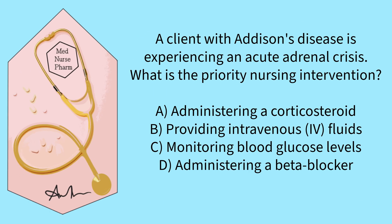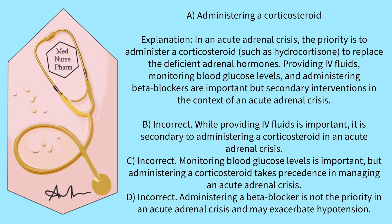A client with Addison's disease is experiencing an acute adrenal crisis. What is the priority nursing intervention? A) Administering a corticosteroid? B) Providing IV fluids? C) Monitoring blood glucose levels? D) Administering a beta blocker? Pause the video and select your answer. The correct answer is A. Administering a corticosteroid.